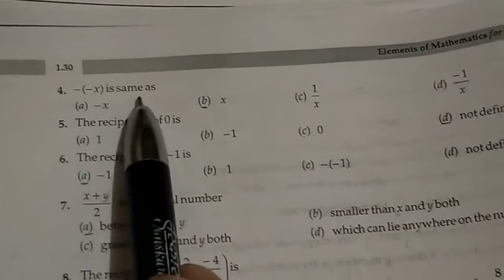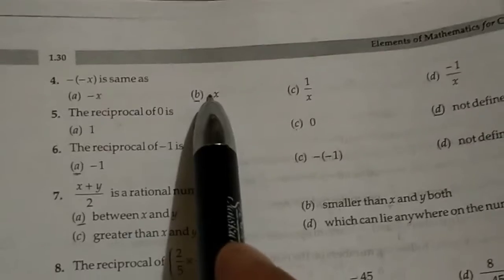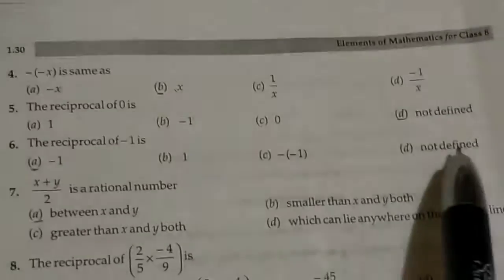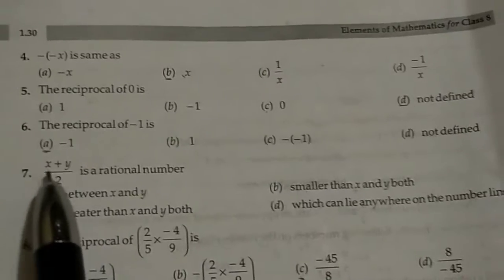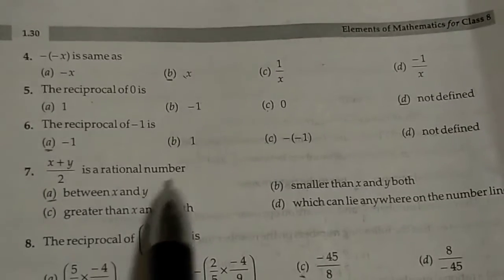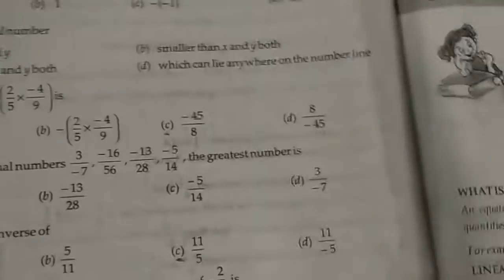Next one is minus of minus x is known as x. Reciprocal of zero is not defined. Reciprocal of minus one is minus one. X plus Y divided by root two is the rational number between x and y.